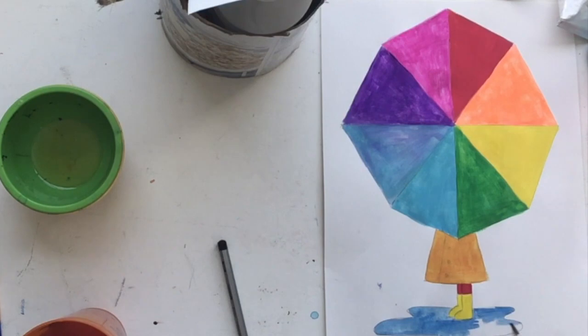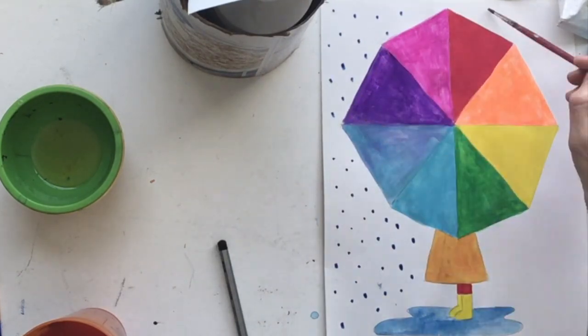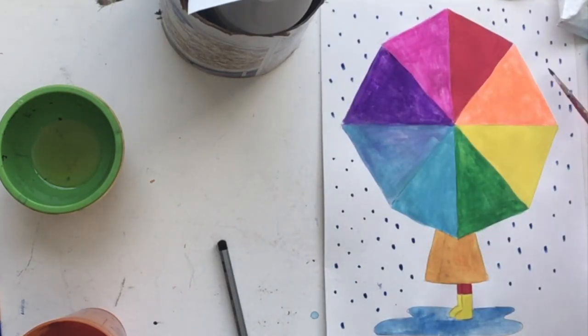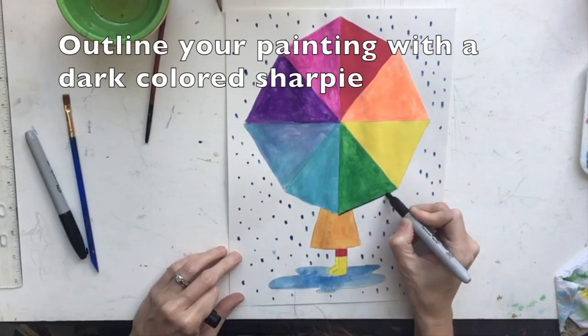We're going to use watercolors to paint our puddle to make it look nice and watery. And then we're going to make lots of little dots all over our paper with our watercolors. It's raining! Now we'll put it on the drying rack and let it dry.